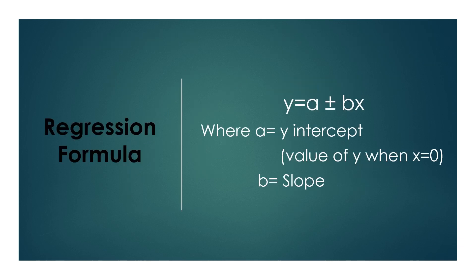Here is the regression formula: y equals a plus or minus bx, where a is the y-intercept — the value of y when x is 0 — and b is the slope.